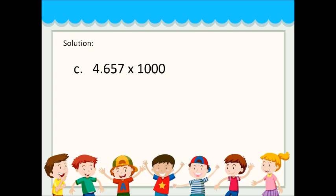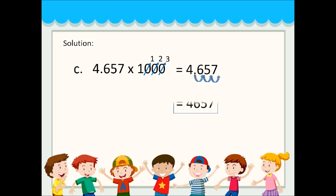For 4.657 times 1,000: 1,000 has three zeros, so we move the decimal point three places to the right — 1, 2, and 3. Therefore, our answer is 4,657.